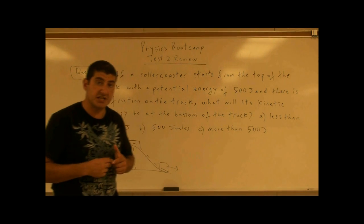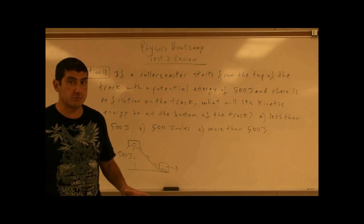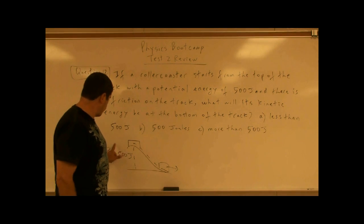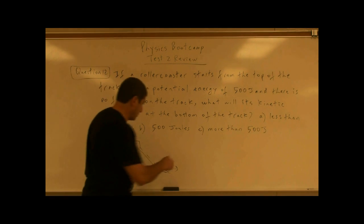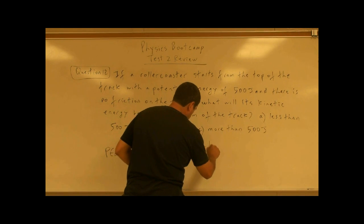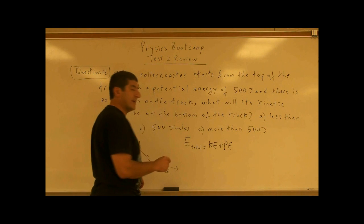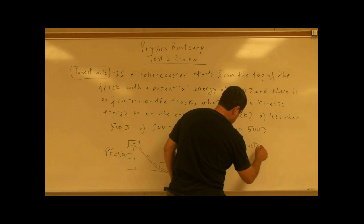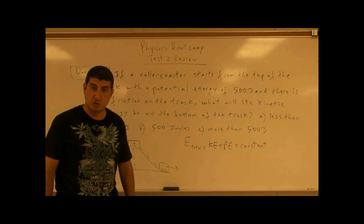This problem is hinting at the fact that if there is no friction, friction is going to do no negative work, so the potential energy and kinetic energy — the sum of the two — is conserved. The total energy of a system equals kinetic energy plus potential energy, and that is constant if the effect of friction can be ignored.